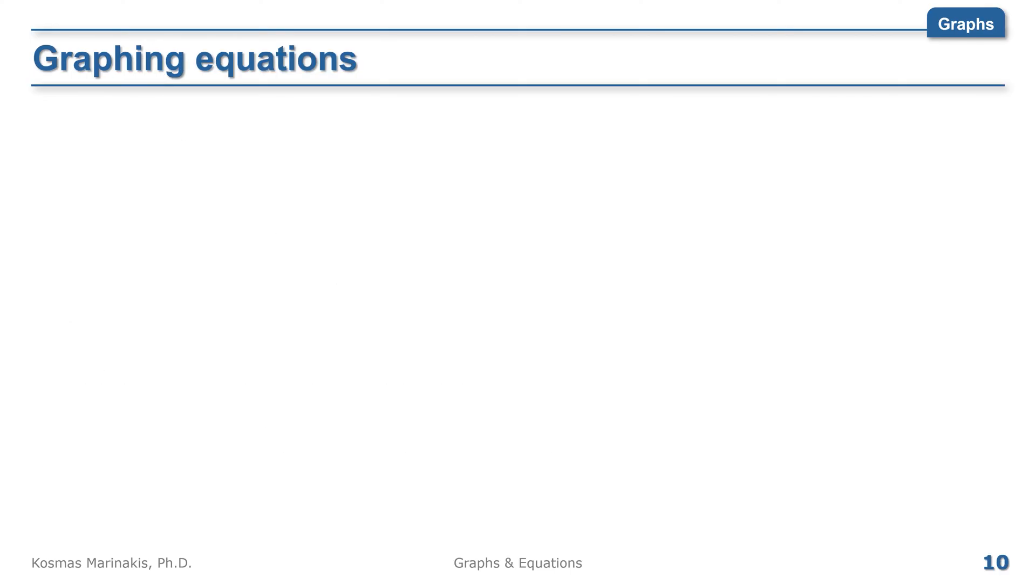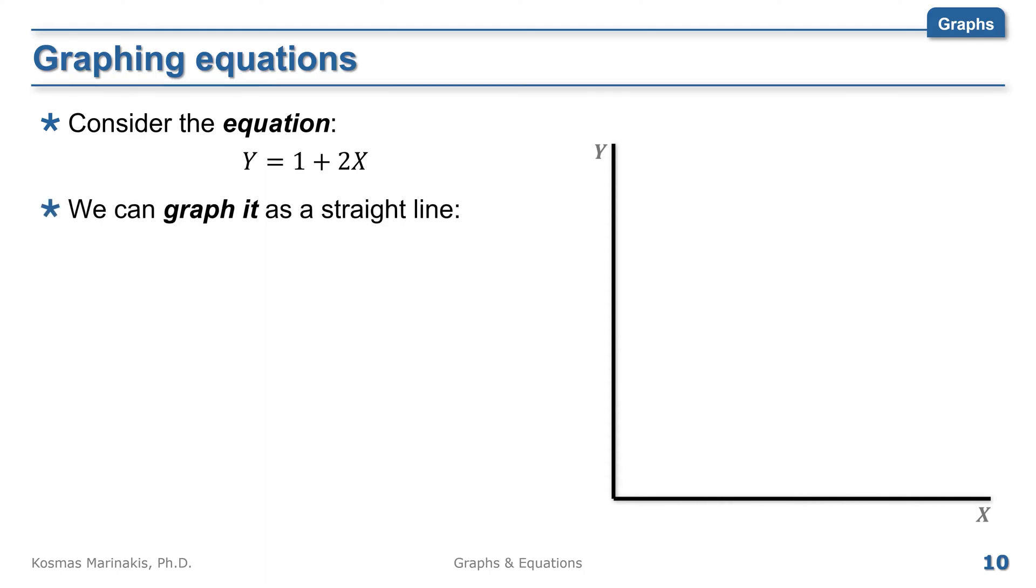Let's practice graphing some equations. First, consider the equation y equals 1 plus 2 times x. This is a straight line and the easier way to graph it is by finding two of its points. The easiest is the intercept at 1. Let's call this point A. For the second point, let me choose x equals 5. This means that y equals 1 plus 2 times 5 equals 11. And this yields point B in our graph.